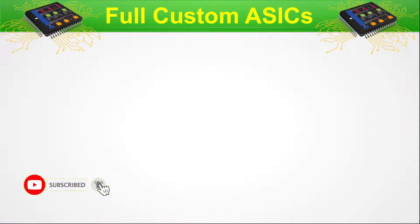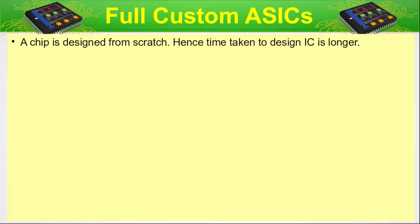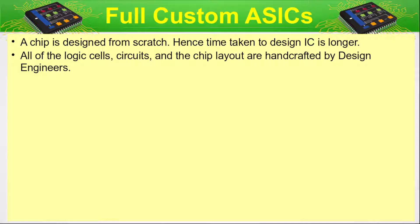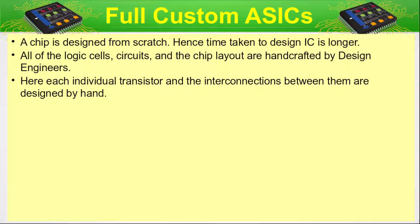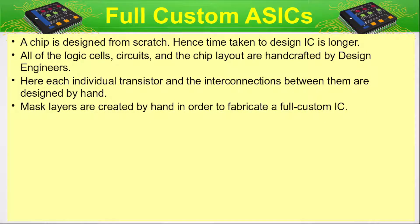A chip is designed from scratch. Hence, time taken to design an IC is longer in full custom ASICs. All of the logic cells, circuits and their chip layout are handcrafted by design engineers — nothing is pre-built or pre-cooked. Everything is started from scratch and built step by step. Each individual transistor and interconnection between them are designed by hand. Mask layers are created by hand in order to fabricate a full custom IC.